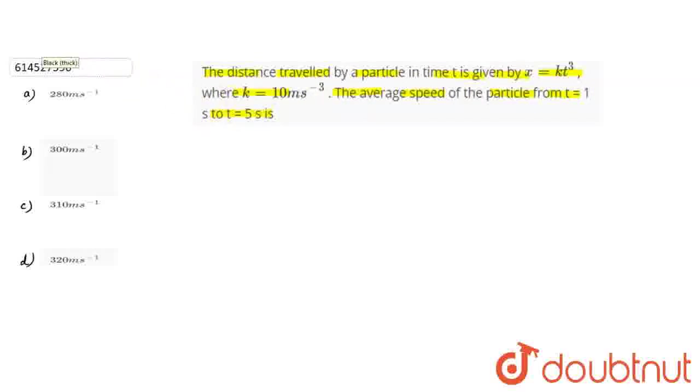Guys, you can see average speed is asked. As we can see that x, which is our position, is a function of time. x equals kt cube is given.